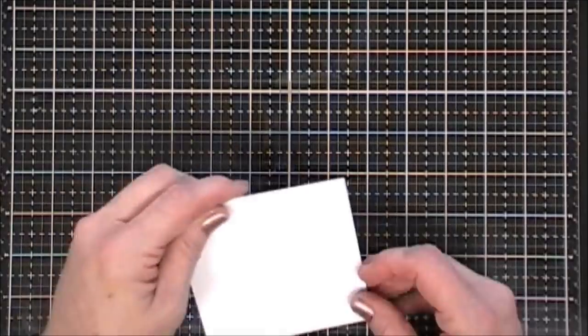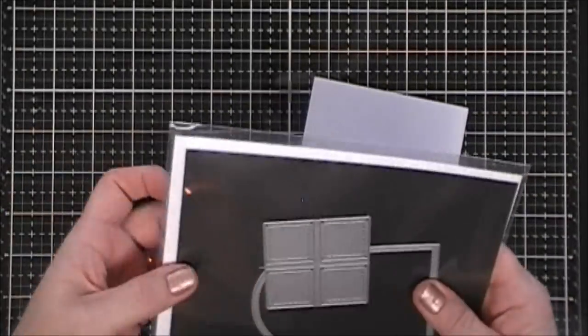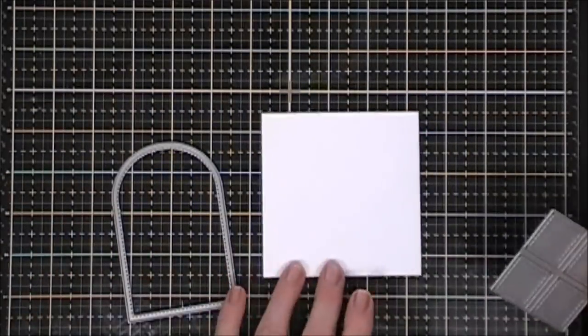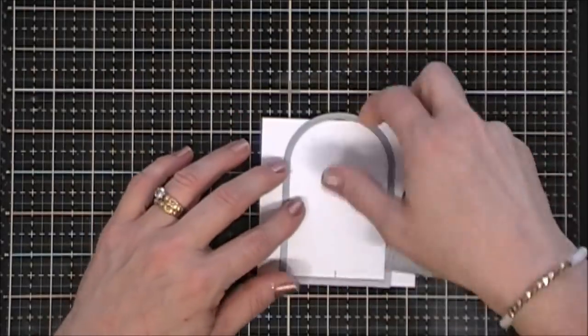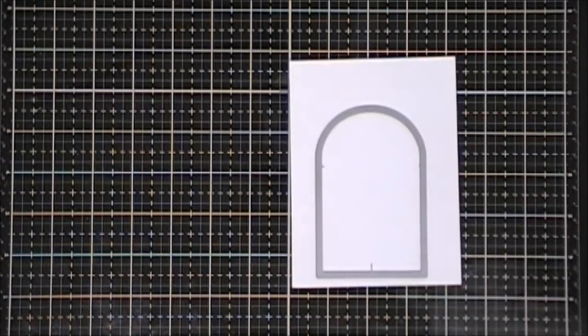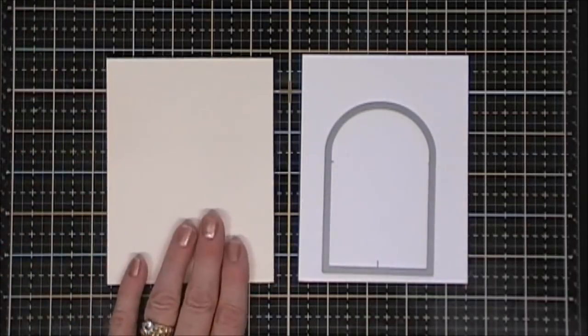Next we're going to do some die cutting. This is the Duo Stitched Duo 3 die from Pretty Pink Posh. It creates a nice domed window frame. Using white cardstock I'm going to cut out a back panel for my window frame, and then using a piece of Very Vanilla cardstock I'm going to cut out my window frame.